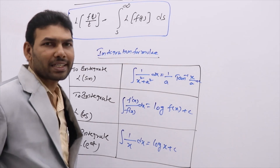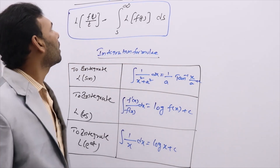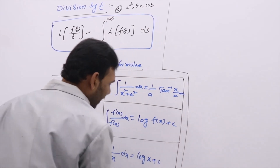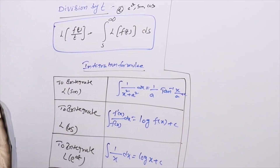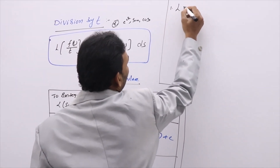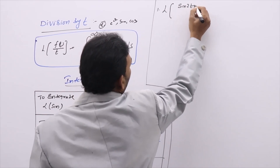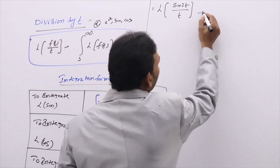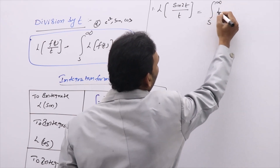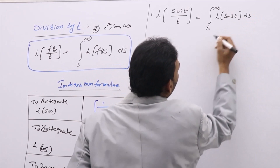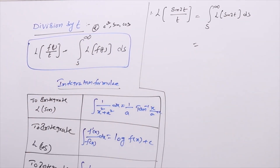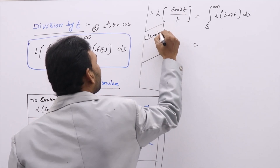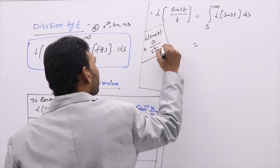These three integration formulas you need to recall whenever you are going to apply the division-by-t rule. Now we are going to see practically how to use these three integration formulas with three examples. Coming to the first example, when sine is in the numerator: L{sin(2t)/t}. When you have t in the denominator, immediately you write: integral from s to infinity of L{sin(2t)} ds.